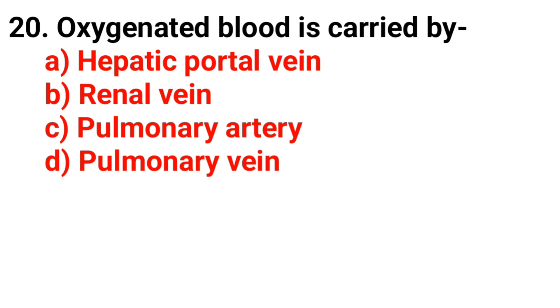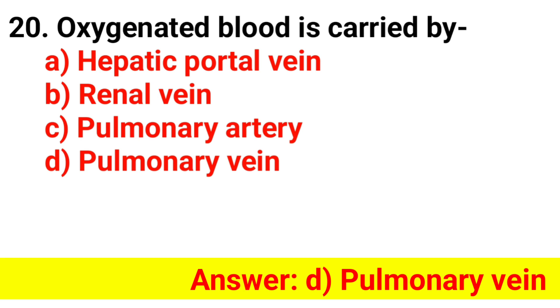Question 20. Oxygenated blood is carried by? Answer is option D — Pulmonary vein.